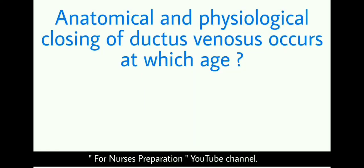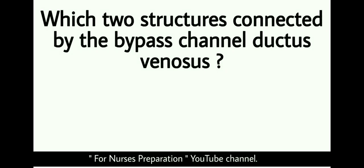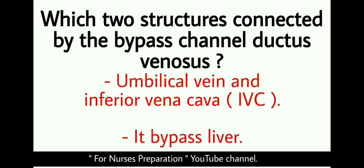Anatomical and physiological closing of ductus venosus occurs at which age? Physiological closing of ductus venosus occurs just 5 minutes after birth, whereas anatomical closing of ductus venosus occurs 7 days after birth. Next: which two structures are connected by the bypass channel ductus venosus? Ductus venosus connects the umbilical vein and the inferior vena cava, and ductus venosus bypasses the liver.